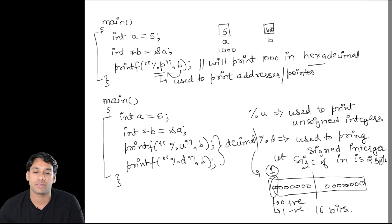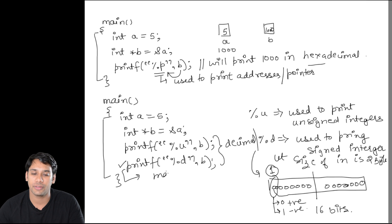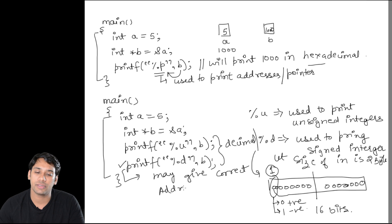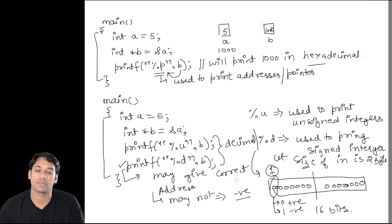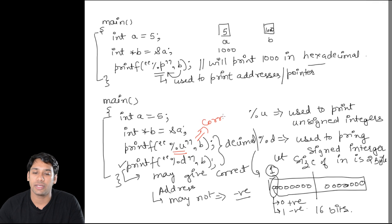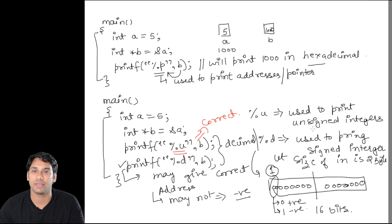So with %d, in some cases it may give the correct address and in some cases it may not — when it does not, it gives the address as a negative number, which is not possible for addresses. But if I use %u, it will always give the correct address and print it in decimal format. Now let us see how we print the value stored at the location pointed to by a pointer.